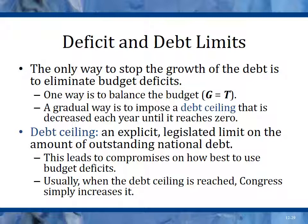Deficit and debt limits: the only way to stop the growth of the debt is to eliminate budget deficits. A gradual way to do this is to impose a debt ceiling. This is debated in the press all the time — we're only increasing the debt ceiling about a year to a year and a half at a time. In 2013 there is another debt ceiling battle where Democrats want to raise the ceiling and Republicans are resisting. Whoever is in power wants the debt ceiling higher, and whoever is not in power wants to lock it in and force the other party to live within their means.